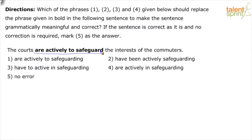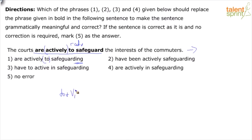New question: 'The courts are actively to safeguard the interests of the commuters.' Option 1: 'The courts are actively to safeguarding.' Actively is an adverb telling to what extent they are safeguarding. Option 1 uses the -ing form, but 'to' requires base verb 1 — it's in the wrong form. So I eliminate option 1.